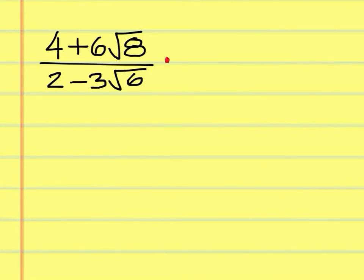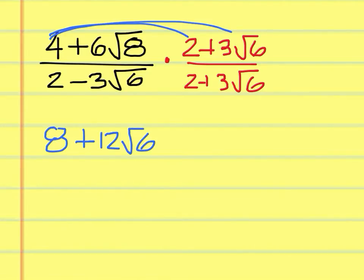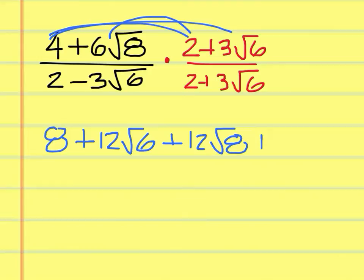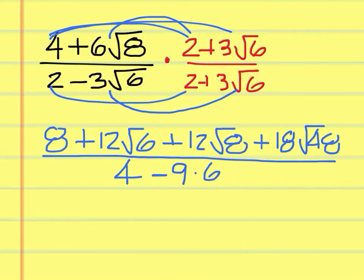To simplify this, we're going to have to multiply the top and the bottom by 2 plus 3 square root of 6. When we do that, on the top we get 4 times 2 which is 8, then 4 times 3 square root of 6 which is 12 square root of 6, then 6 square root of 8 times 2 is 12 square root of 8, and 6 square root of 8 times 3 square root of 6 is plus 18 square root of 48. On the bottom, 2 times 2 is 4, and then this times this gives me minus 9 times 6.